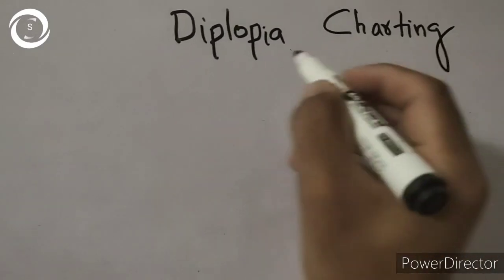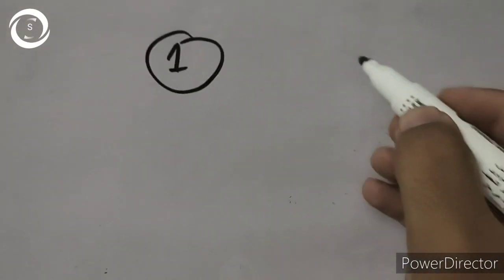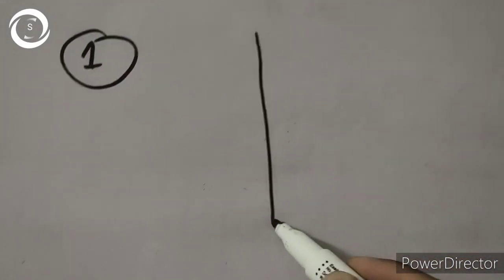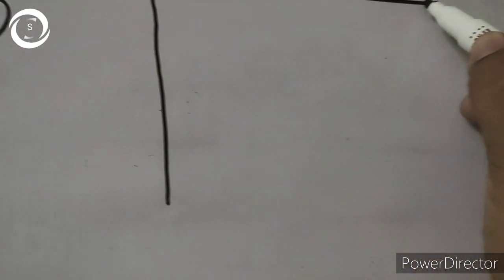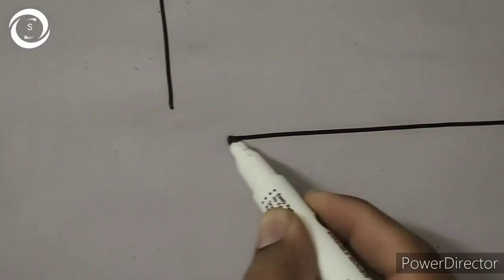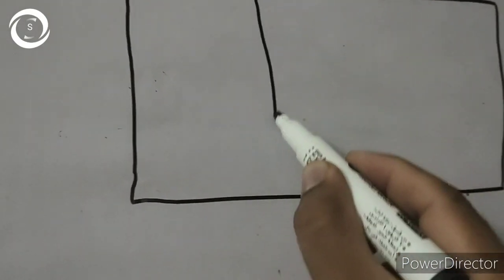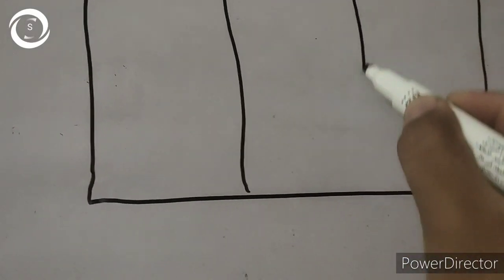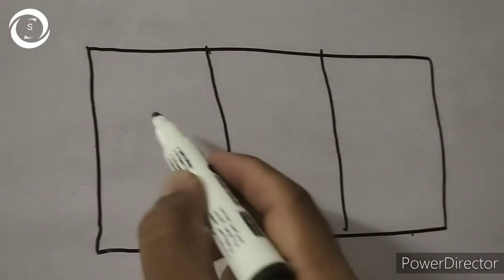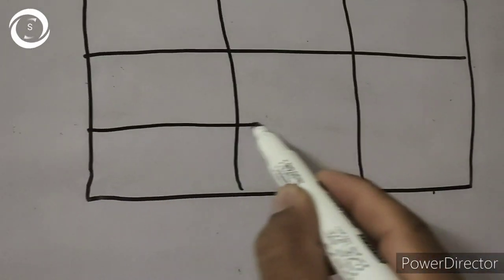For plotting the diplopia accurately, patient should be seated comfortably at examiner's level with head erect and still. Now I achieve this feat by placing the head of the patient on the slit lamp chin rest and head rest, and I remove the slit lamp illumination as well as focusing side away.